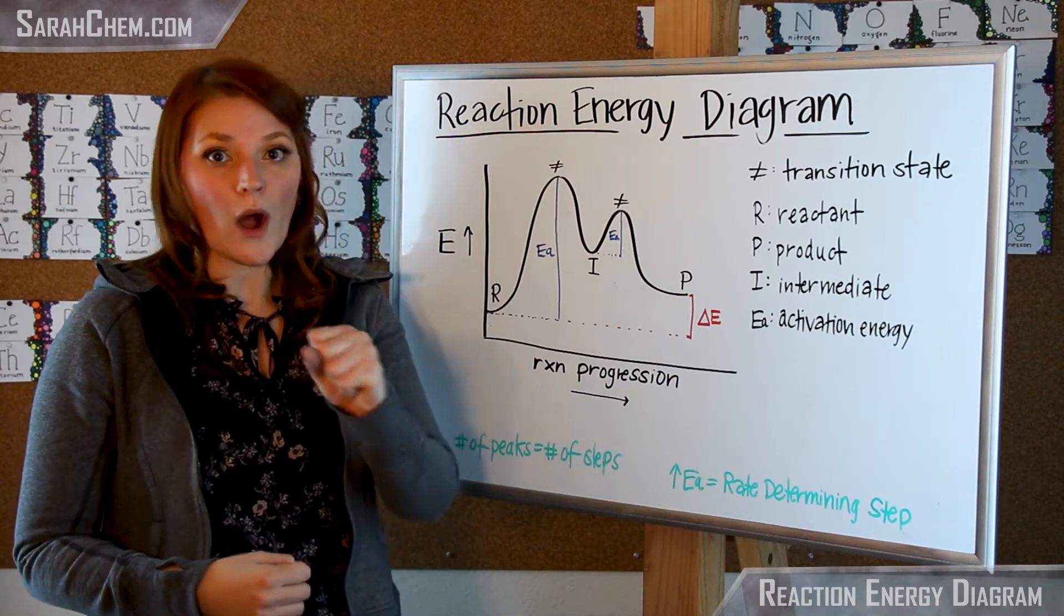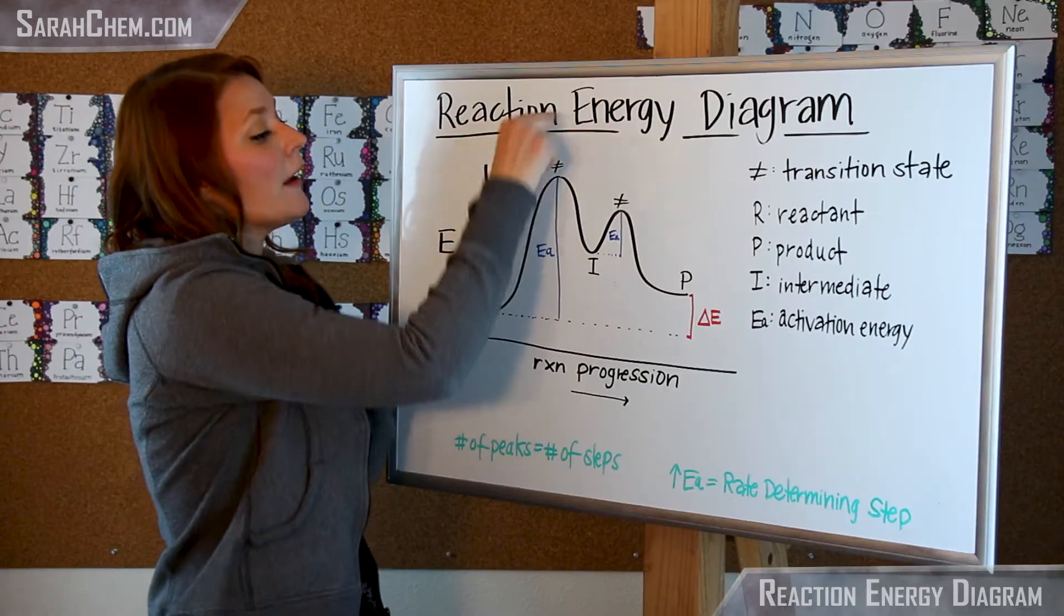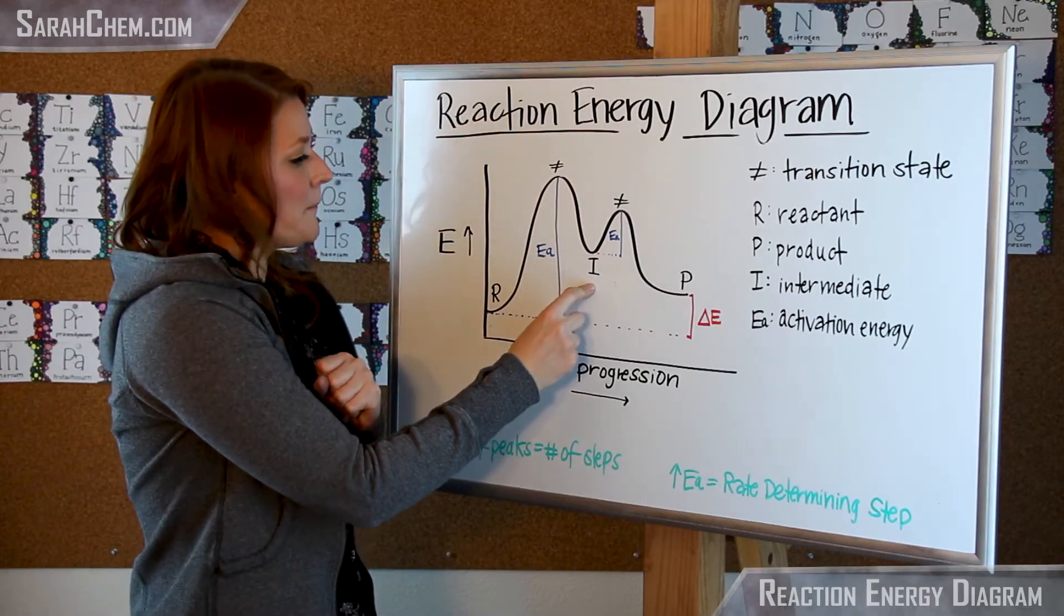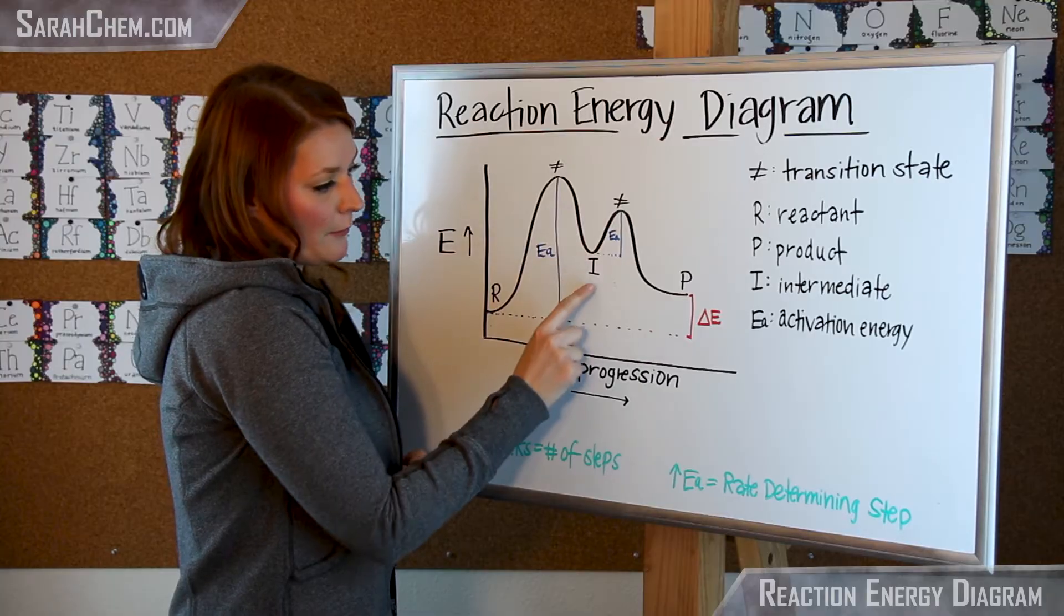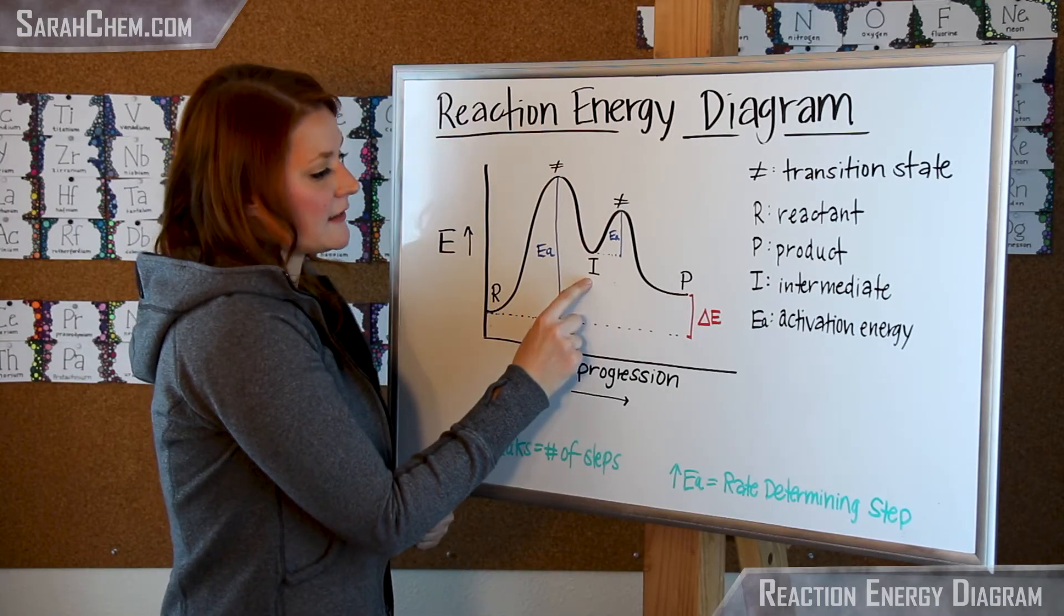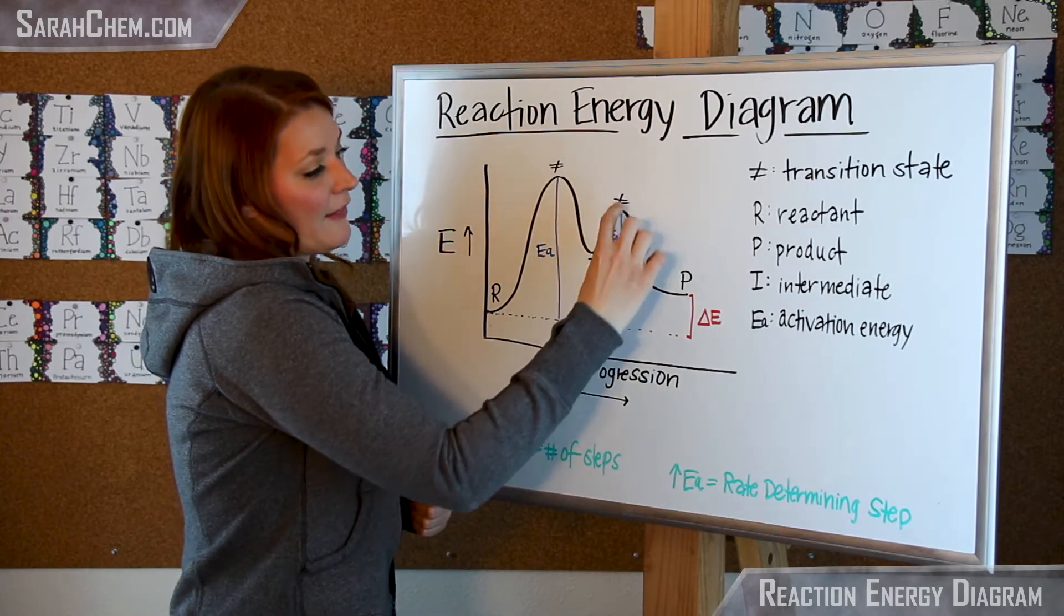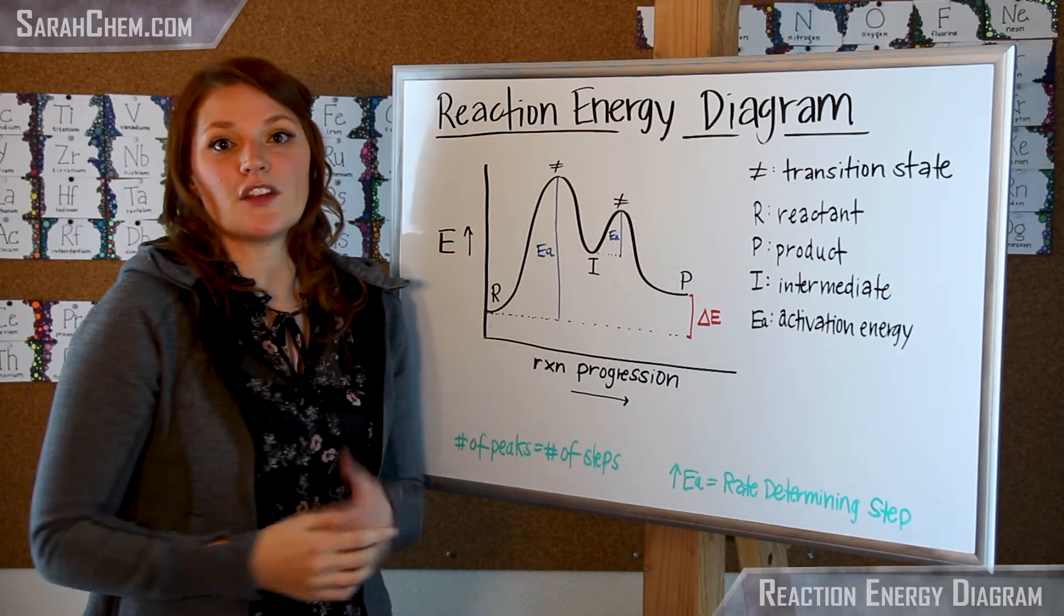Essentially it's the amount of energy required in order to go from this step over the hump into the next step. This is also an activation energy barrier, so now we're going from the preceding species, which in this case is the intermediate, to the peak, and the difference in those energies would be the activation energy barrier.